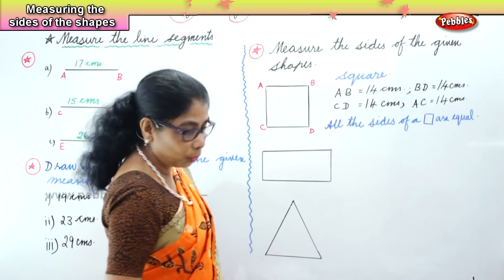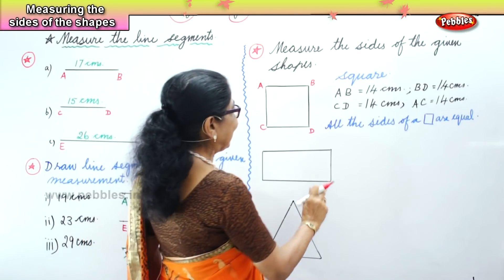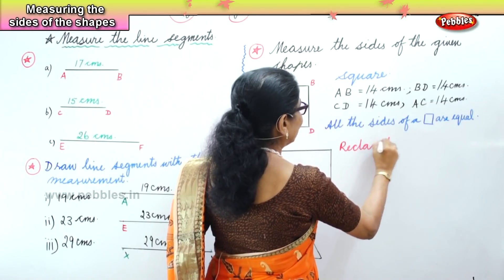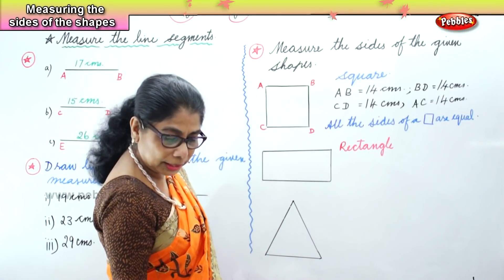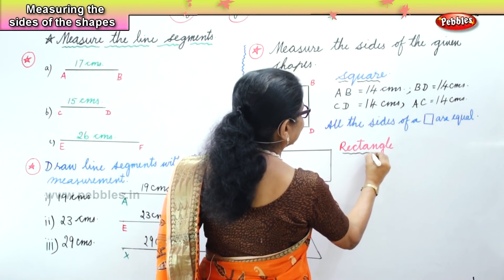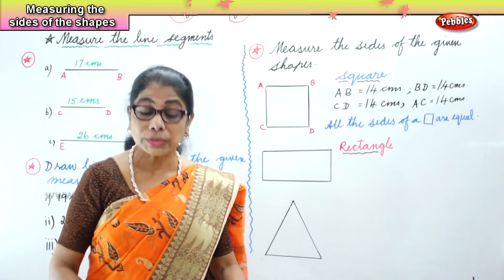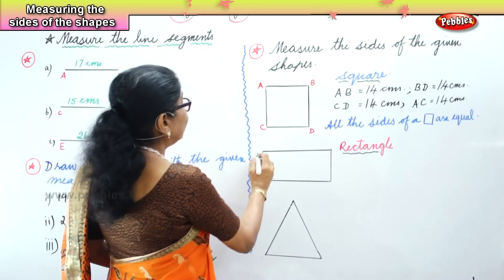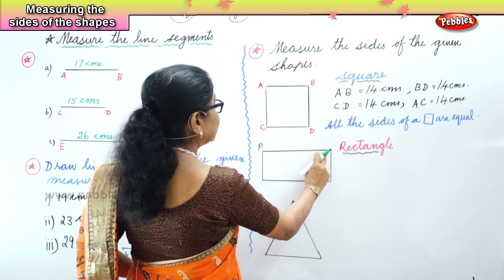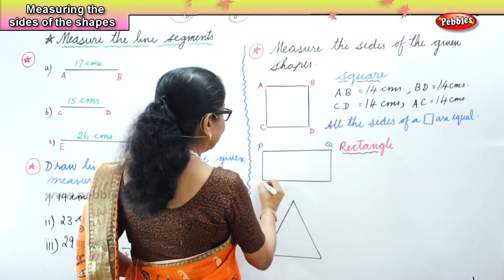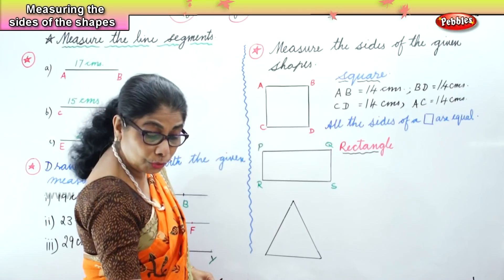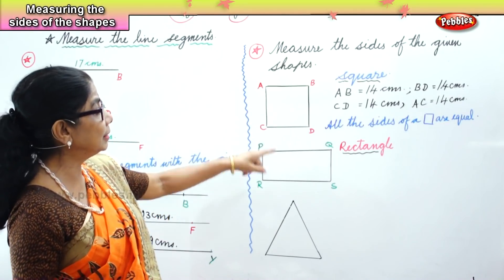Next we go to the rectangle. We have a rectangle. Now let's look at the rectangle — we are going to measure each of those sides. Now we go to name the four corners of the rectangle. The first point is P, next point Q, this point R, and this point S.